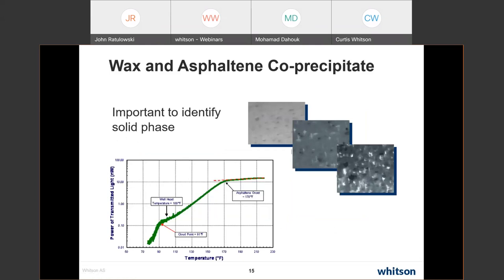A notable image shows one of the rare cases where wax and asphaltenes were observed coming out together in a live system. Asphaltenes appear first, followed by wax (shown as white areas). This illustrates that wax and asphaltenes can be co-occurring problems.